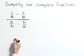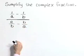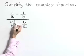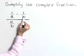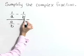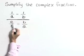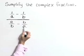We're going to simplify this by multiplying through both the numerator and denominator with what we would call a lowest common denominator of all of these minor fractions. What we mean by minor fractions are this 1 over A, the 1 over B, the A over B, and the B over A.